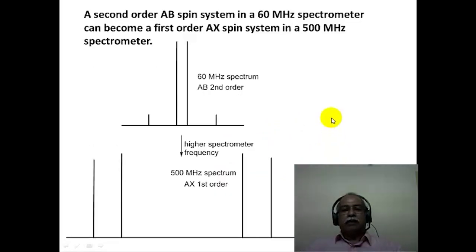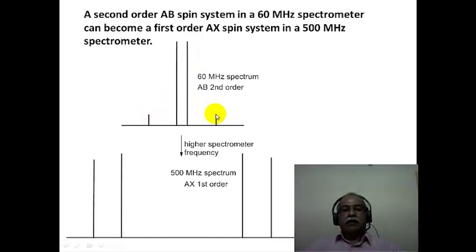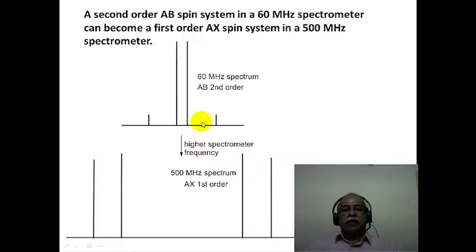This is graphically represented in this slide. A second order AB spin system in a 60 MHz spectrometer can easily become a first order AX spin system in a 500 MHz spectrometer. In the second order case, inner lines are much taller than outer lines. At higher frequency, both doublets have nearly equal intensity, and one can reasonably approximate the center of each peak as the chemical shift values delta-A and delta-B.